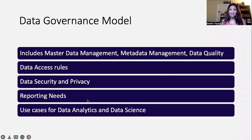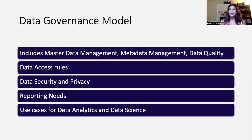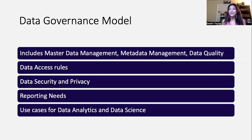What does a data governance model look like? A data governance model can include master data management, metadata management, as well as data quality. It includes establishing data access rules — who has access to this data? At a database level, it would typically be technology folks like database administrators, data miners, et cetera. But when data is exposed through dashboards or reports, it could be accessed by other people in your organization. Even then, would external parties have access to it? Obviously not. So you want to make sure your data access rules are in place, and if you're in a sector like healthcare, it is even more important because of HIPAA regulation.